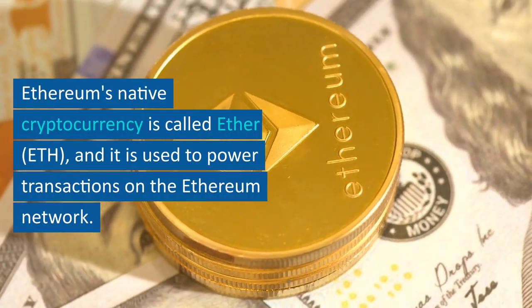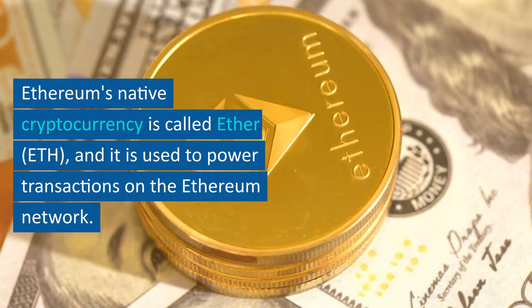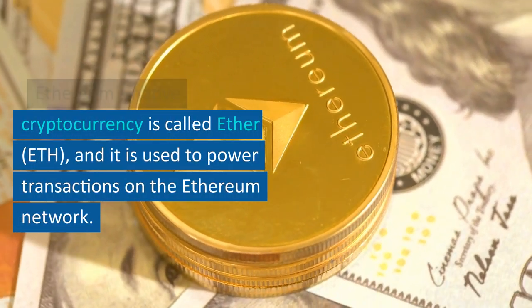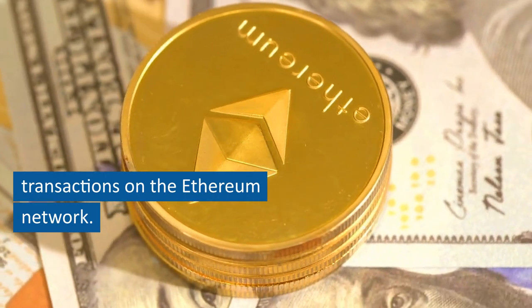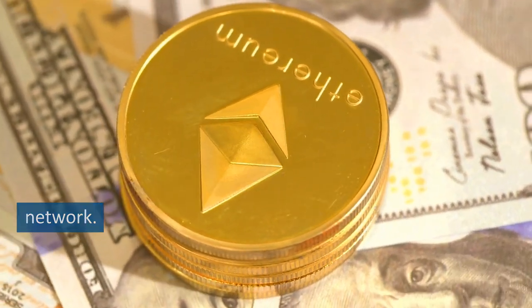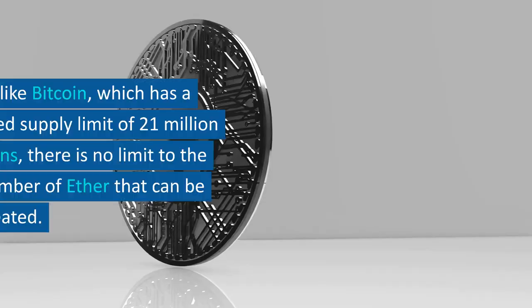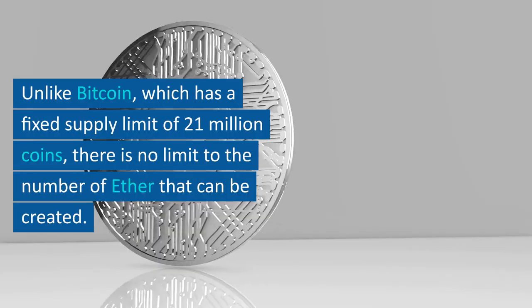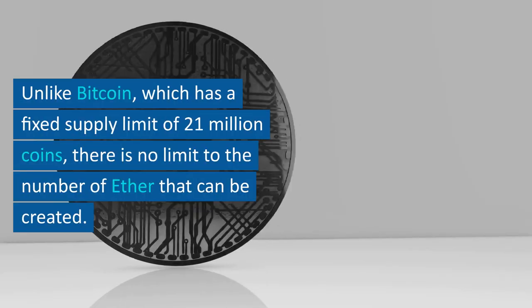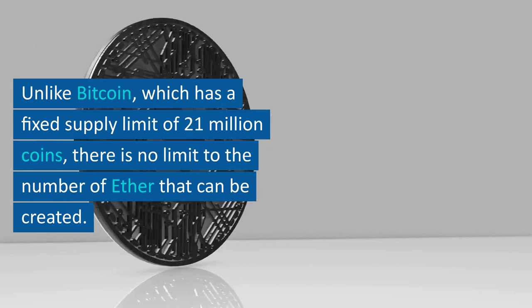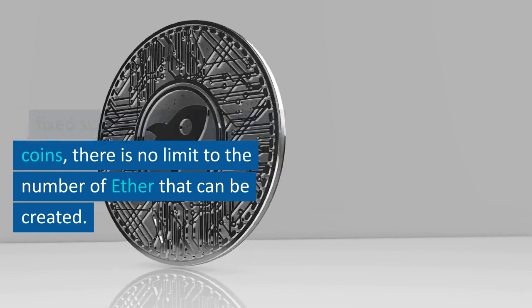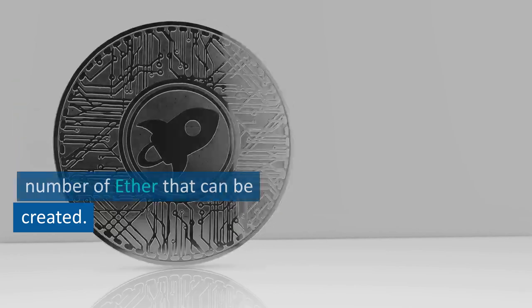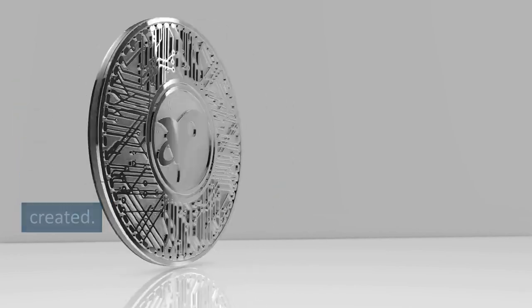Ethereum's native cryptocurrency is called Ether, ETH, and it is used to power transactions on the Ethereum network. Unlike Bitcoin, which has a fixed supply limit of 21 million coins, there is no limit to the number of Ether that can be created.